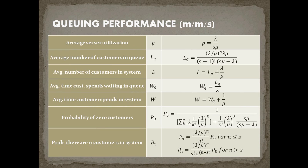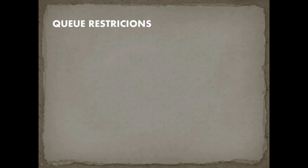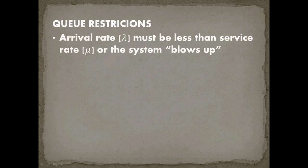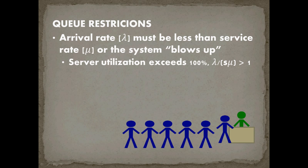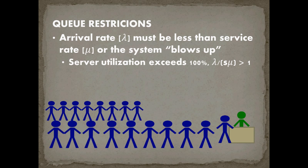These metrics adapt when going from one server to S number of servers without too many changes. There is one major restriction: the arrival rate lambda must be less than the service rate mu, or the system blows up. If service cannot keep up with arrivals, the line will grow to infinity.